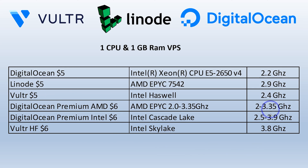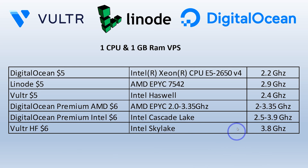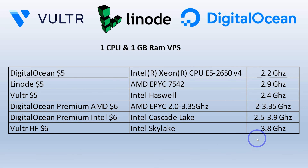Just looking at the clock speed of the CPUs, you'd expect it to come down to Vulture High Frequency and this new DigitalOcean Premium Intel. Even though these are all marketed as one CPU and one gigabyte, they all have different CPU settings. We're going to run those benchmarks and see how this actually makes a difference in terms of benchmark performance.